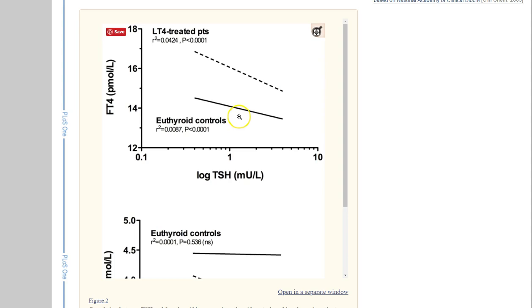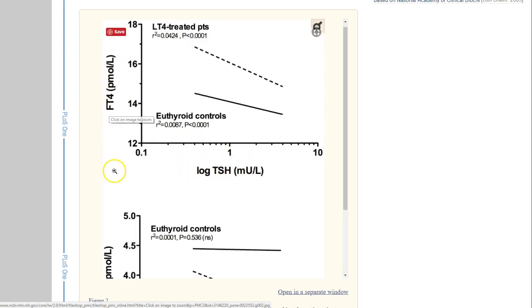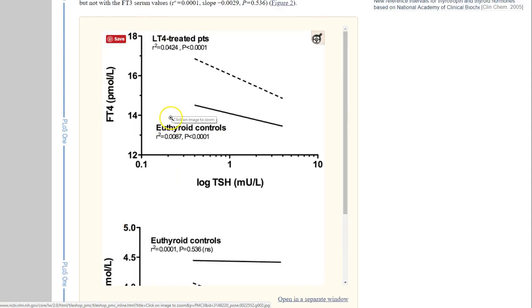And so, on this graph, you can see the solid line right here. This is the healthy euthyroid controls, which just means normal healthy patients. The dashed line up here are the patients who don't have a thyroid who are being treated with T4, and then on the x-axis, you have the TSH, and then on the y-axis, you have their free T4. And we're going to do the same thing down here, but I want to start up here first.